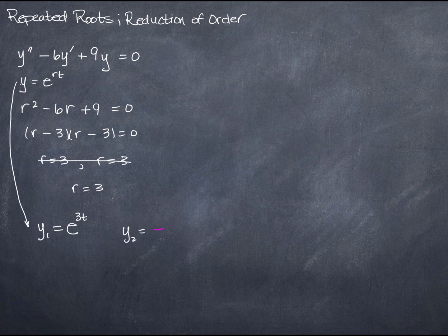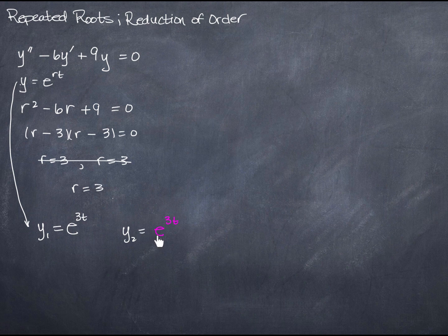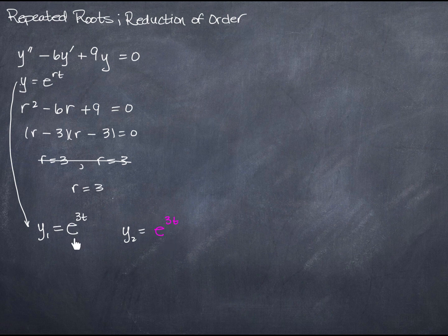We can't just say y2 is another e to the 3t, because then we'd have two solutions that are just multiples of each other. The Wronskian would be zero, meaning we haven't found independent solutions and they don't form a fundamental set. For those who've taken linear algebra: these are like two vectors where one is just a multiple of the other — they don't span R², they only span R¹.